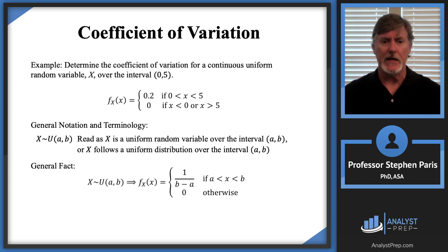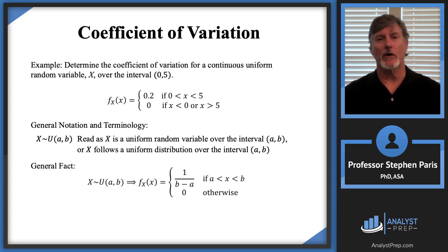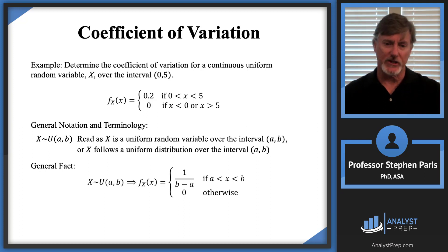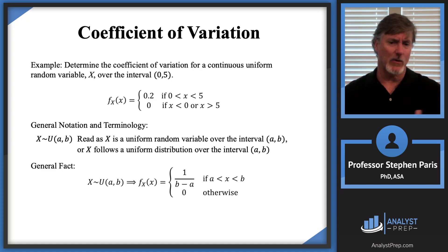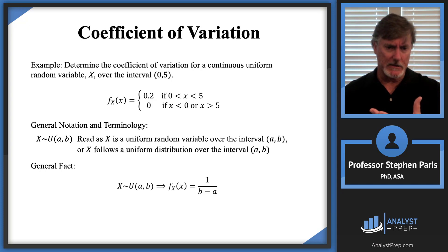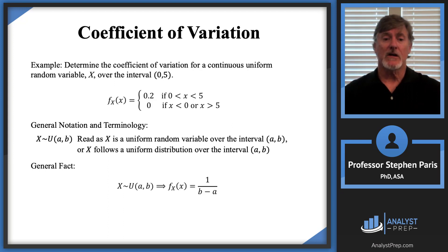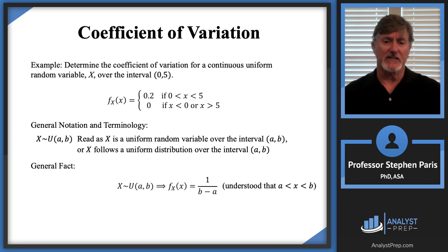Now let's determine the coefficient of variation for the continuous uniform random variable X over the interval from zero to five. The coefficient of variation is the ratio of the standard deviation to the mean. The density function is 0.2. The mean is the integral from zero to five of 0.2x dx, which gives 0.1x² evaluated from zero to five, equal to 2.5.